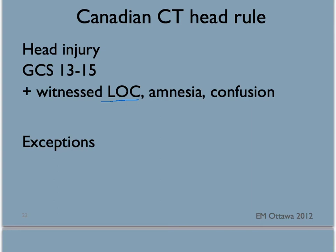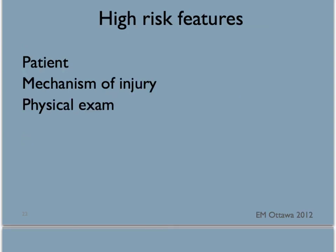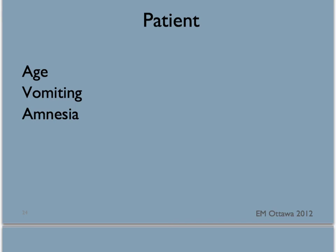There are a few exceptions to this rule. This rule does not apply to children under the age of 16. It also does not apply to those who have higher risks of bleeding, such as those with congenital bleeding disorders or if they're on anticoagulants. Under this rule, if the patients have certain clinical features, they should have a CT scan of the head. These features fall into three different categories: the patient, the mechanism of injury, and the physical examination. High risk patient factors include age over 65, vomiting more than two episodes, and amnesia before impact more than 30 minutes.